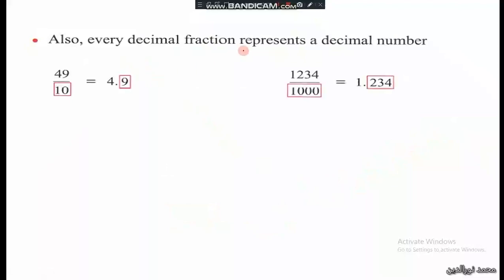Every decimal fraction also represents a decimal number, so we can write the decimal fraction as a decimal number. Here we have forty-nine over ten — one zero means one decimal digit — so it equals four point nine. Here we have three zeros, so we take three digits as decimal digits and put the point accordingly: one point two three four.